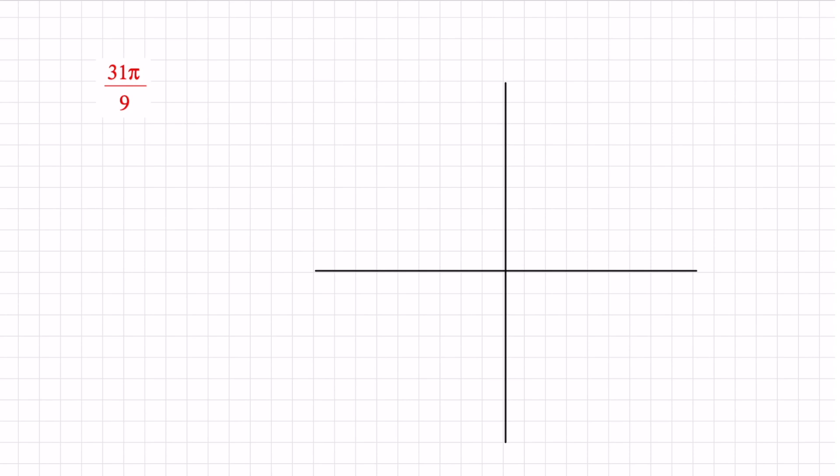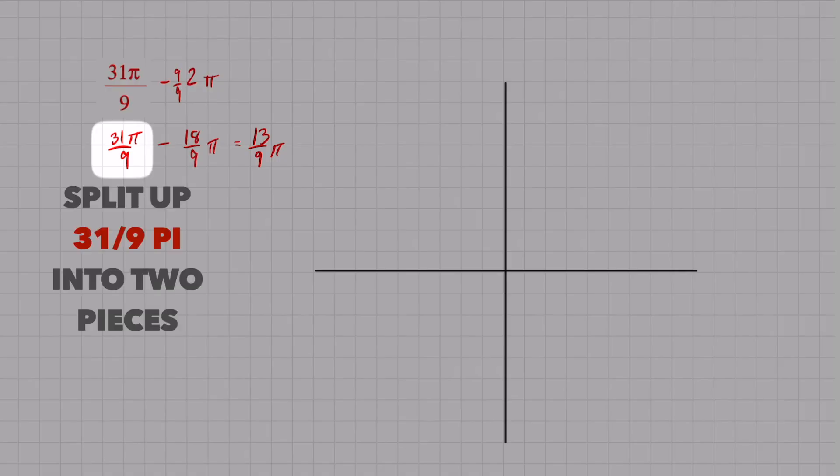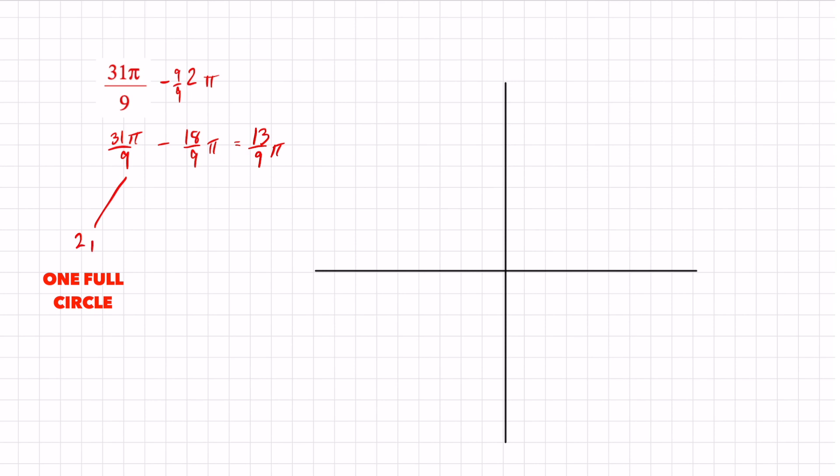So when that happens, this is what I do. I'm going to subtract that one full rotation. So I'm going to take 31 over 9 and subtract 2π. There's some more fraction work. 31π over 9. I just got to multiply this by 9 over 9. So that's 18 over 9 π and I get 13 over 9 π. So visualize it this way. 31 over 9 is the same as 2π, one full rotation, and 13 over 9 π, which is what we calculated right there.